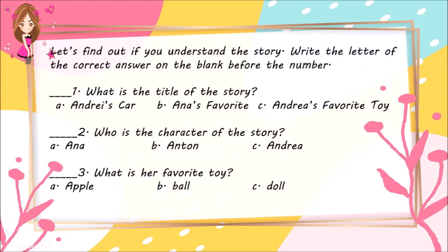Let's find out if you understand the story. Write the letter of the correct answer on the blank before the number. Number 1: What is the title of the story? A. Andre's car. B. Anna's favorite. C. Andrea's favorite toy.